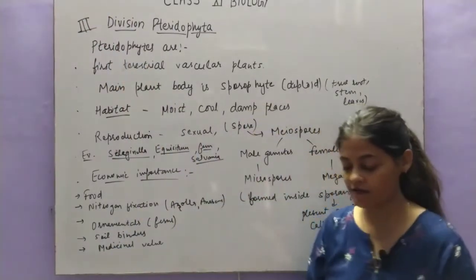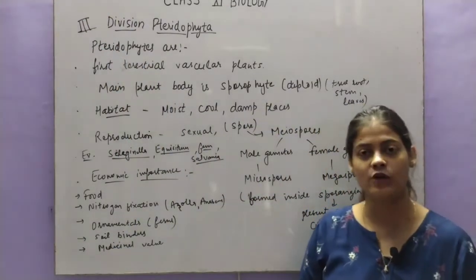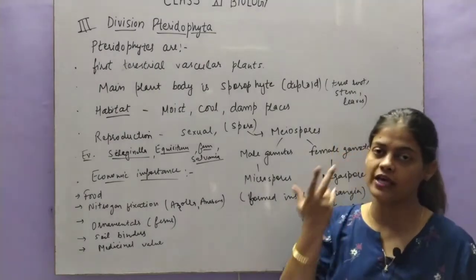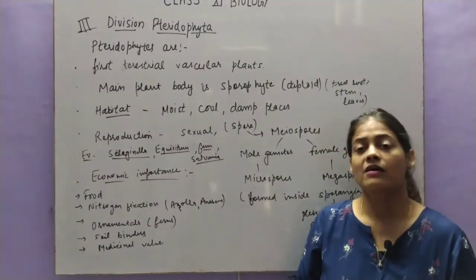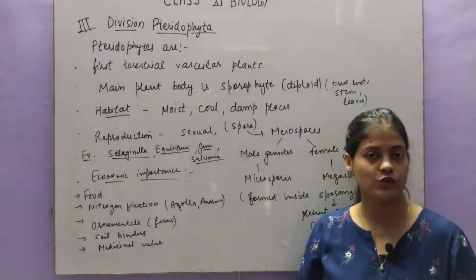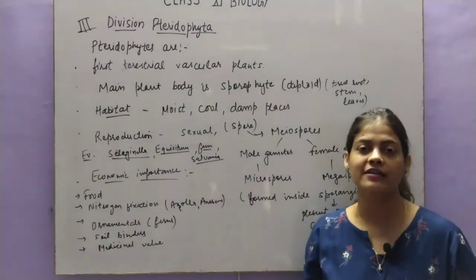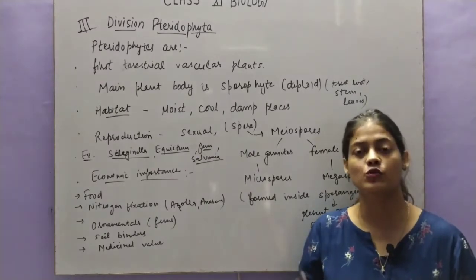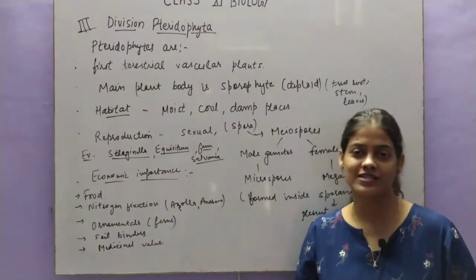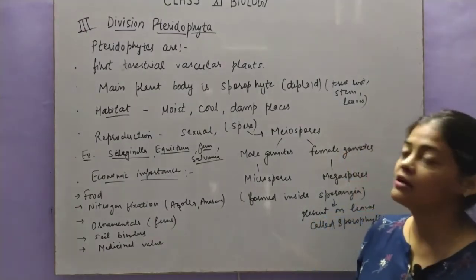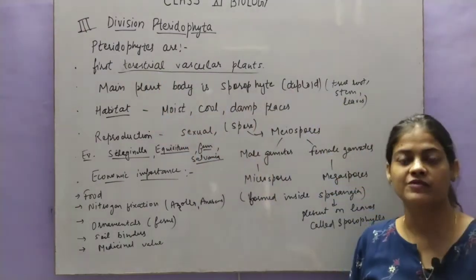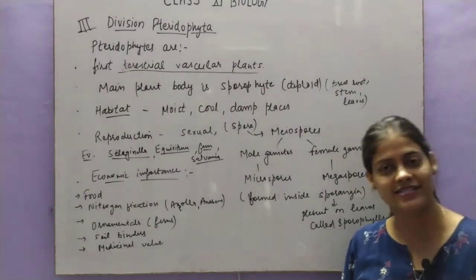We have discussed two divisions — thallophyta and bryophyta. In thallophyta and bryophytes, there was a thallus-like structure, so they do not require vascular tissue, because plant height is low in those cases. Vascular tissues are generally needed when plant height increases. So this is a very important point: pteridophytes are the first terrestrial vascular plants which have vascular tissue, that is xylem and phloem.